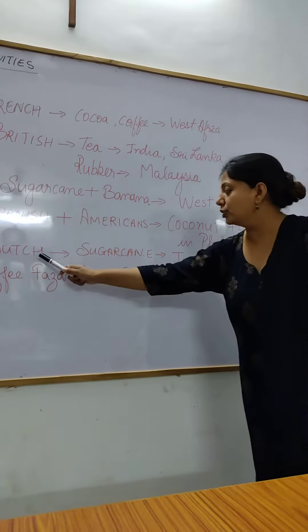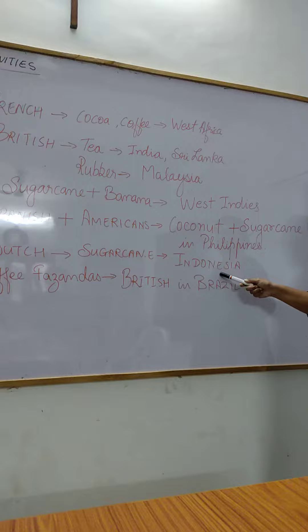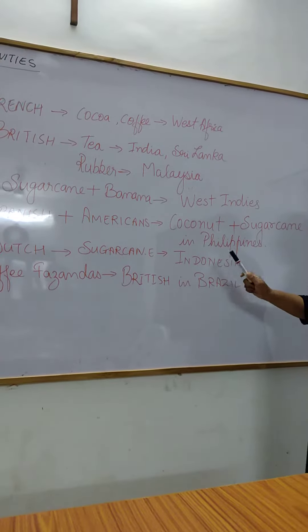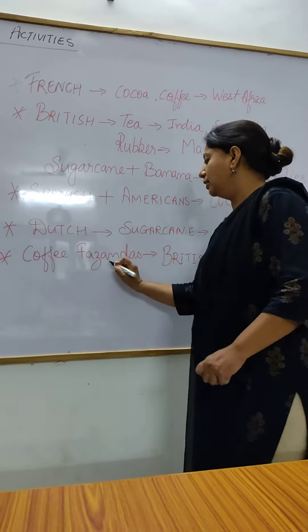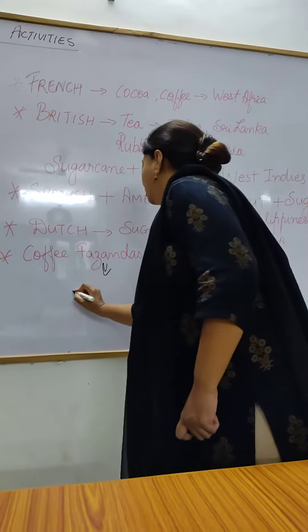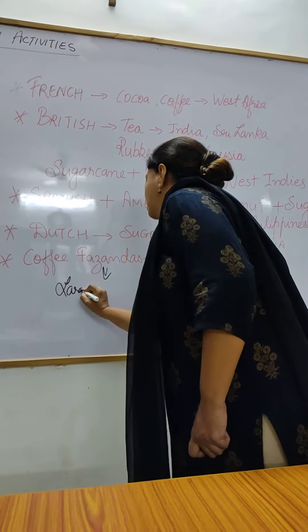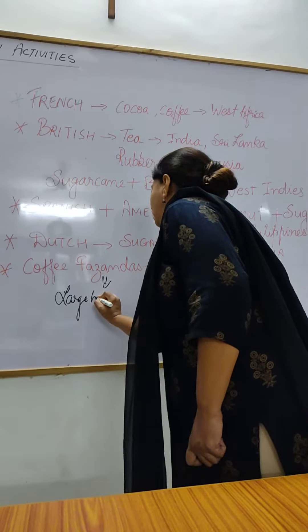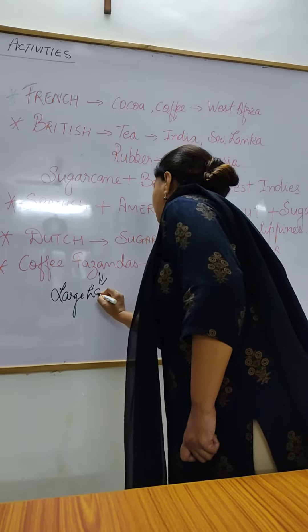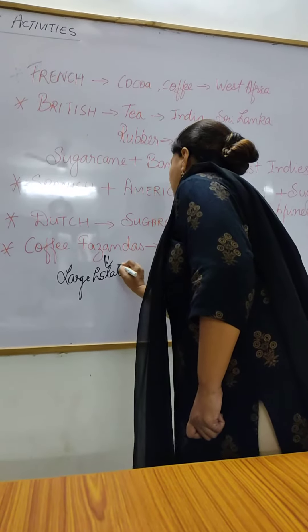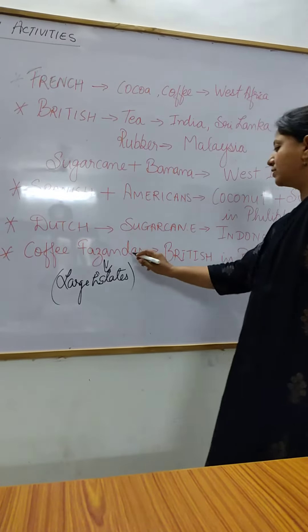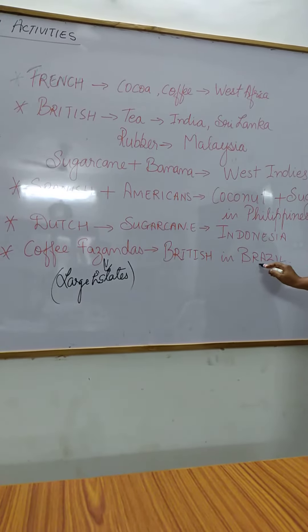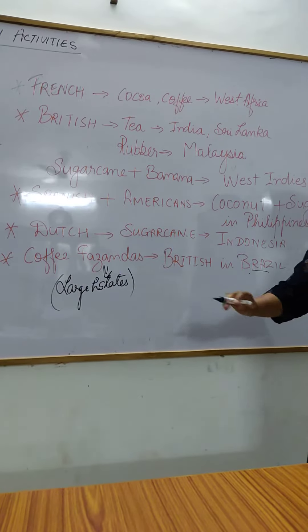The Dutch introduced sugar cane in Indonesia and coffee fazendas. Coffee fazendas are large estates. They are known as fazendas in Brazil and were introduced by the British.